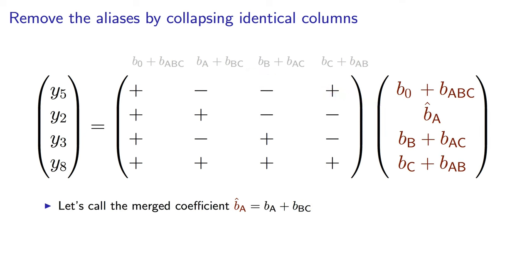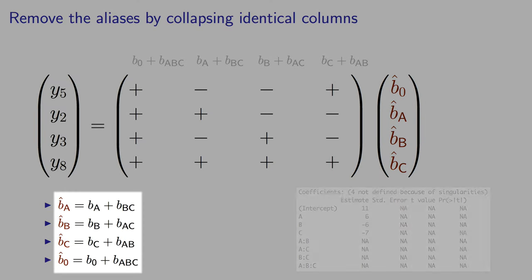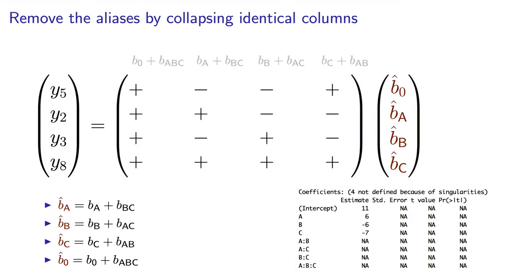Similarly, the coefficient for B is the sum of the original B plus AC, and so on. These four entries here are our aliases. It also explains why you see only four coefficients in the R software output, and NA values for the remainder of them. R notices that there are aliased terms in the full system that we requested a model for, but it will only report the coefficient for one of the aliases.